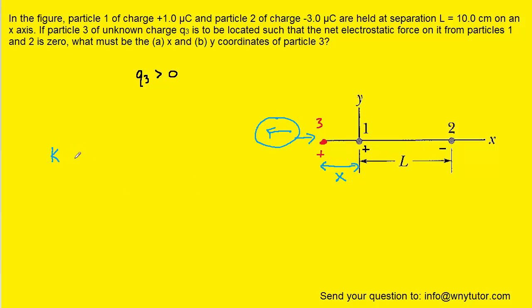That is an electrostatic force, so it's going to be the coulombs constant multiplied by the magnitude of charge 1 and the magnitude of charge 3, divided by the distance between the charges squared. So that would be x squared.